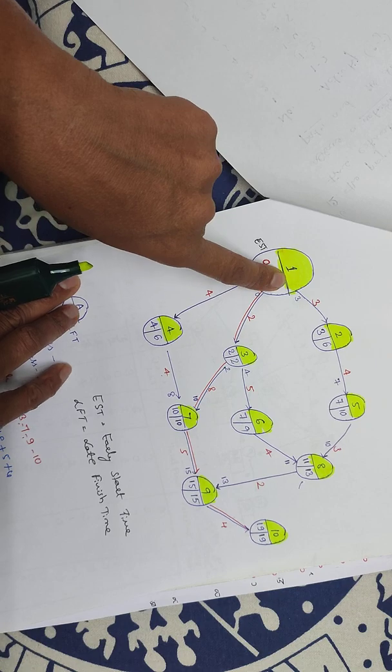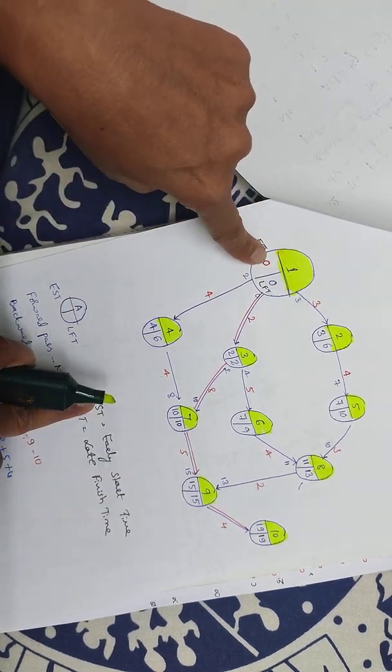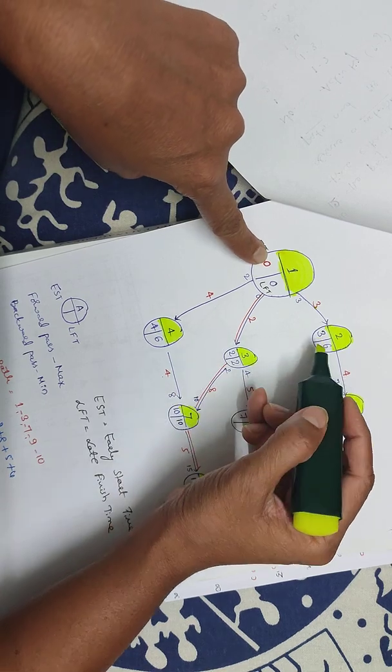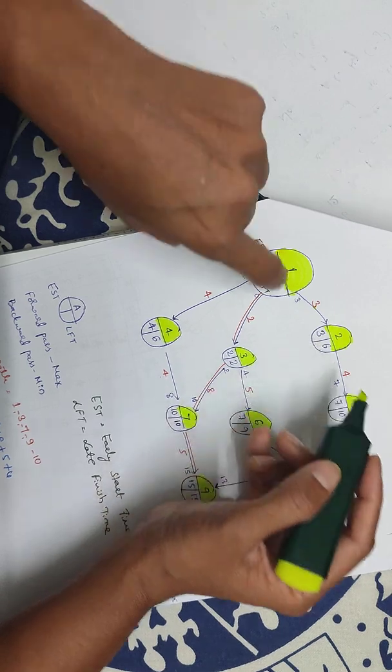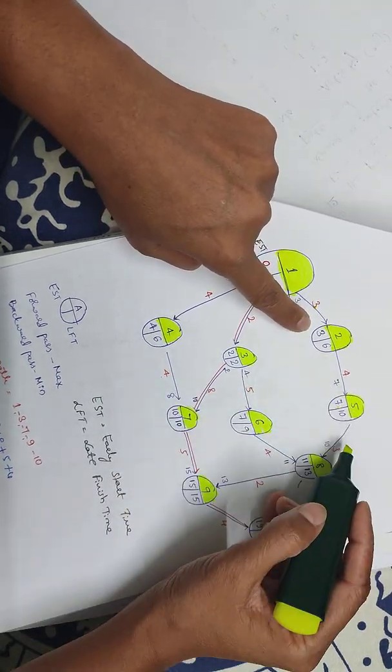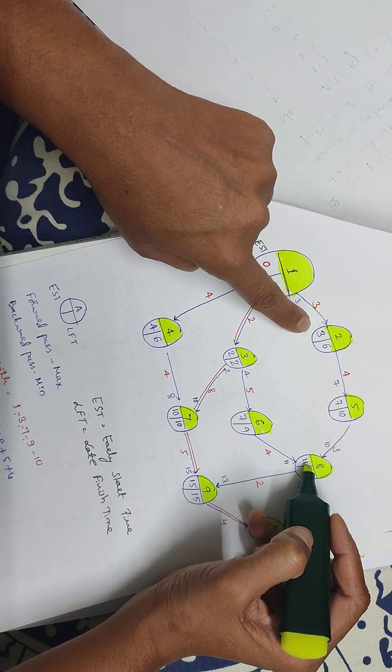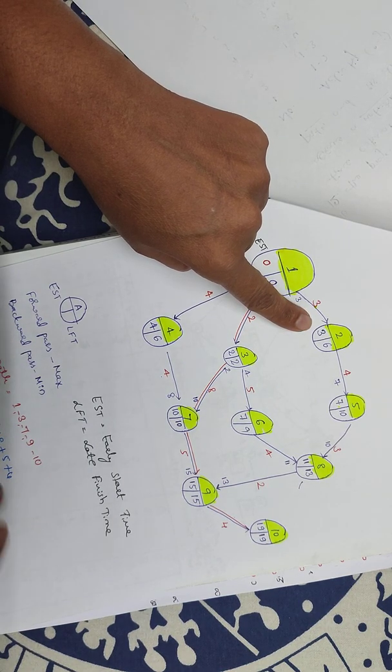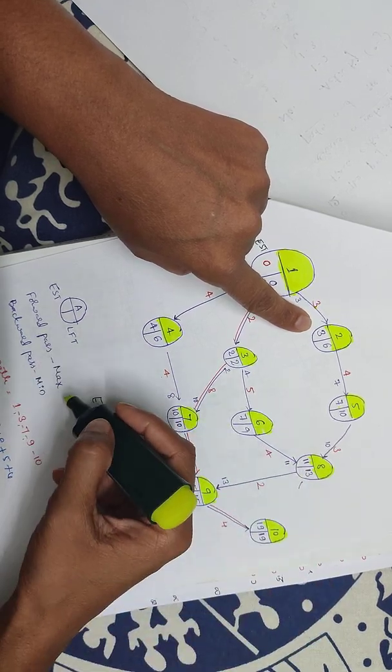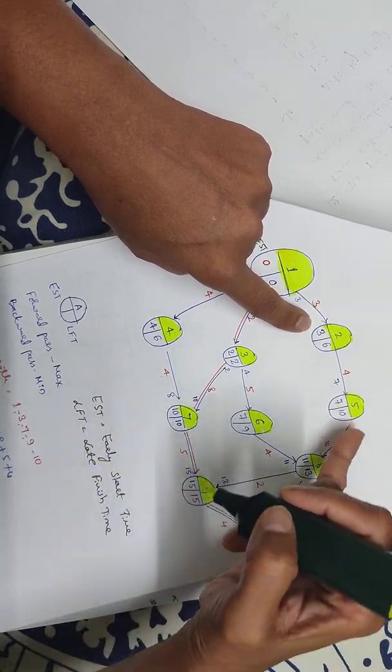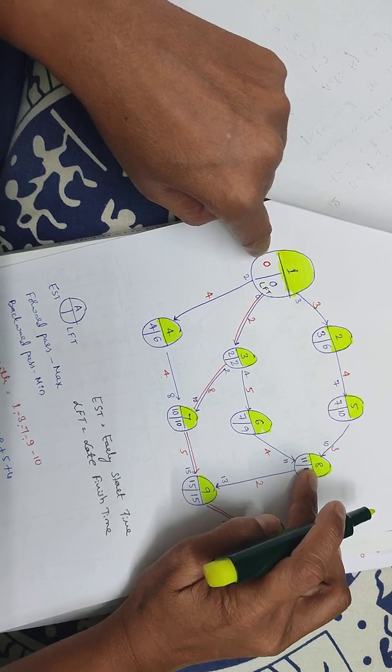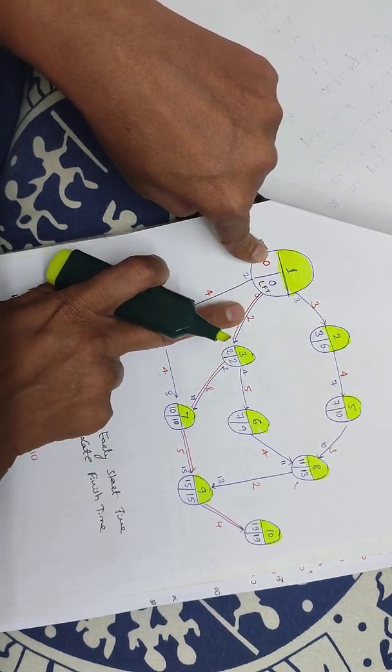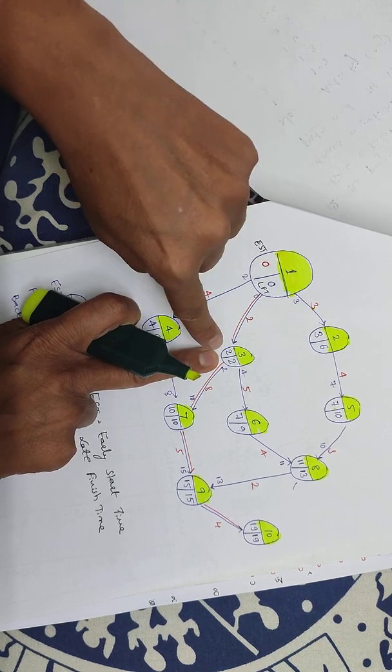Next calculation: early start time plus duration. For the second activity, early start time 0 plus 3 equals 3. 3 plus 4 equals 7. 7 plus 3 equals 11. In forward pass, when two arrows come, we take the maximum. At node 6, 5, 8, 7, 10.